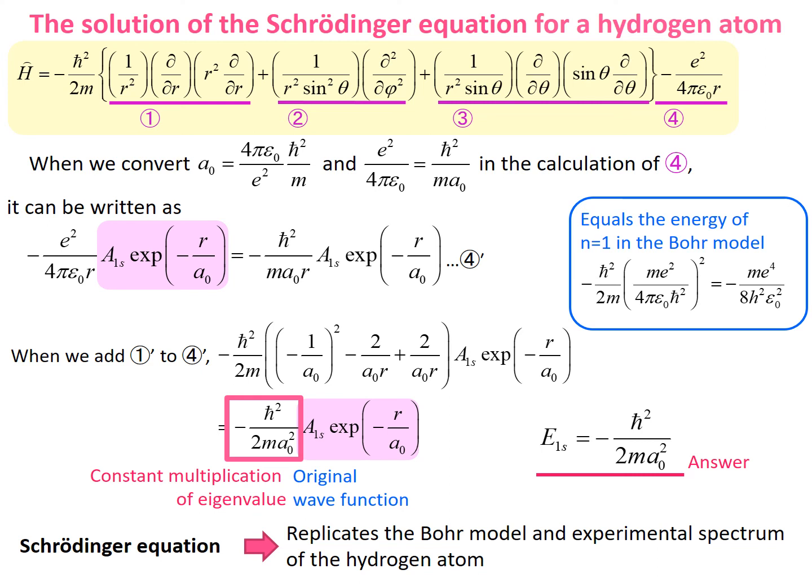Then, we substitute the defined value of the problem, a0 equals 4 pi epsilon 0 upon e squared, times h bar squared upon m, in the result, and we should get the same value equal to the energy of n equals 1 in the Bohr model.